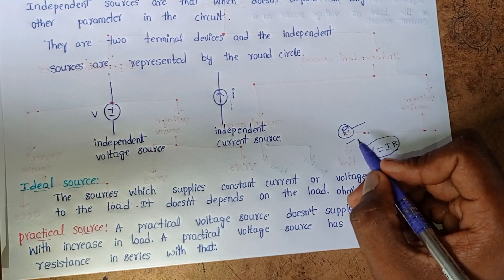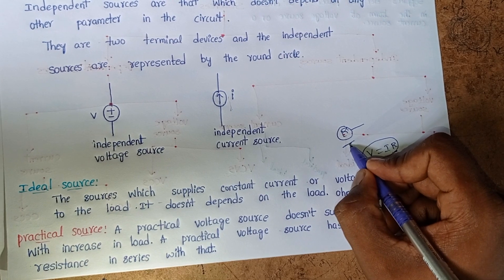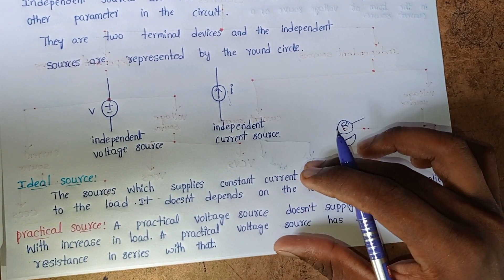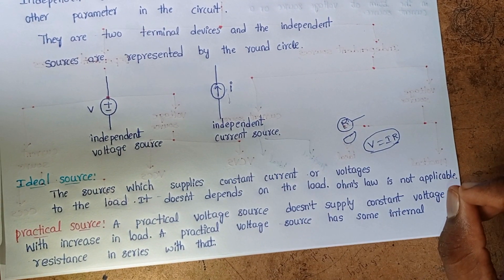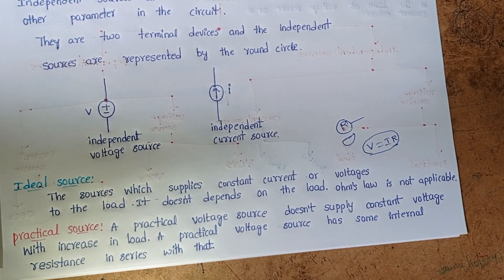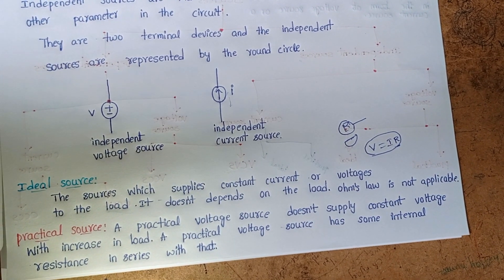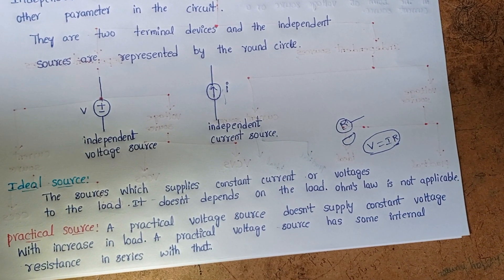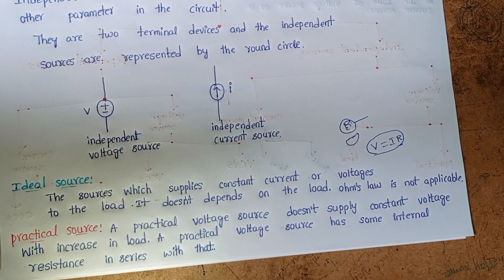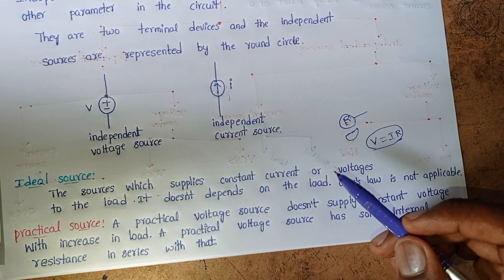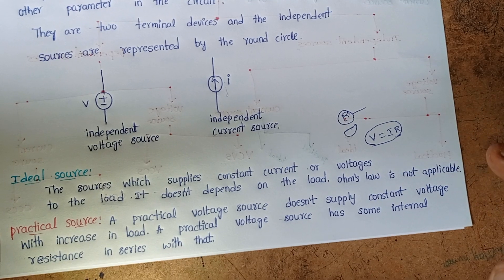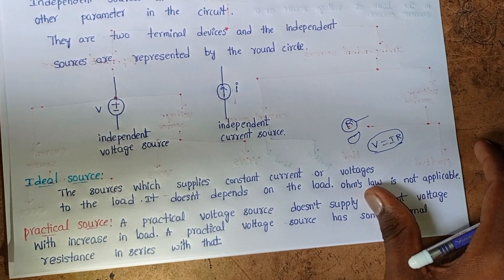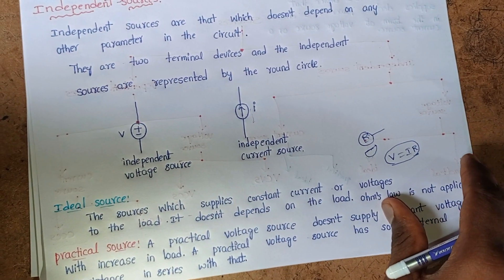Because of this internal resistance, practical sources cannot supply constant voltages or constant currents to the load. If the load increases, the voltage may decrease; if the load decreases, the current may also change. We cannot supply constant current and voltage in practical independent sources.